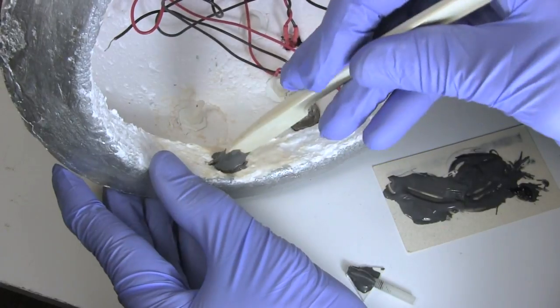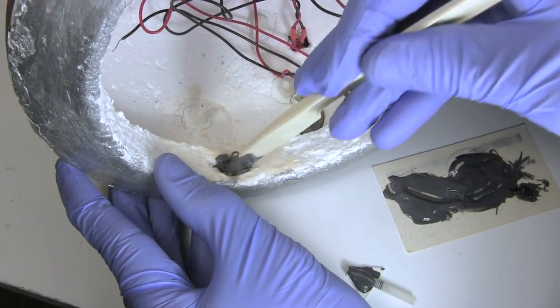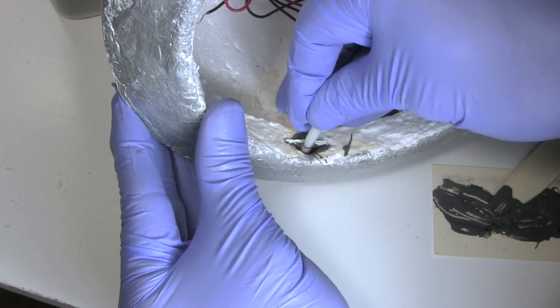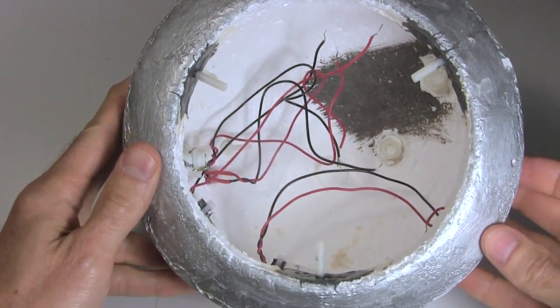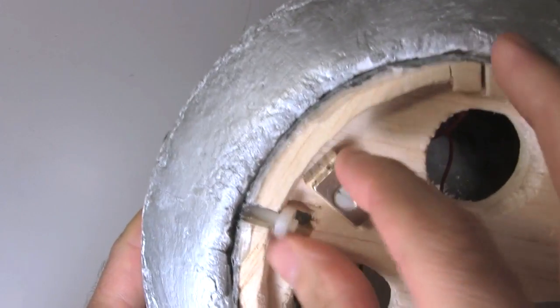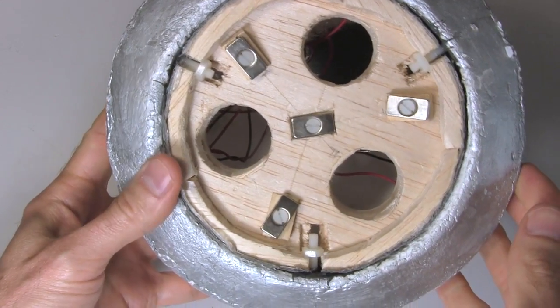24 hours later, the JB Weld is hardened and so I mix up another batch and put it in fresh holes in the head. I push in a bolt. And here are the three bolts in place 24 hours later. I slide the head support in place and put on the nuts. The new way of attaching the head support is done.